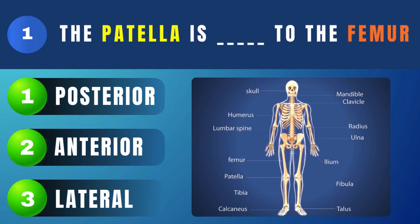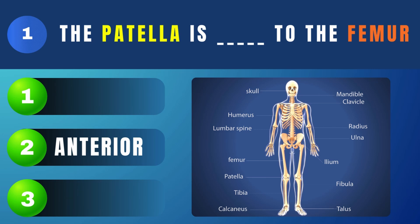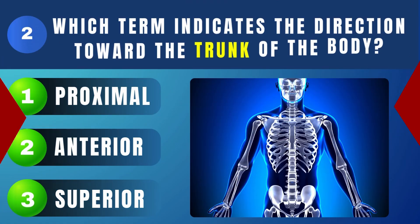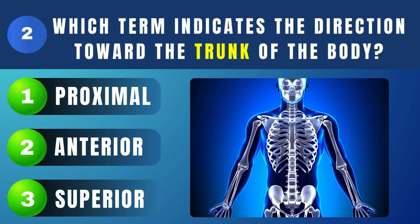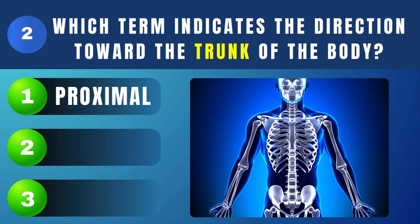The patella is what to the femur? Anterior. Which term indicates the direction toward the trunk of the body? Proximal.